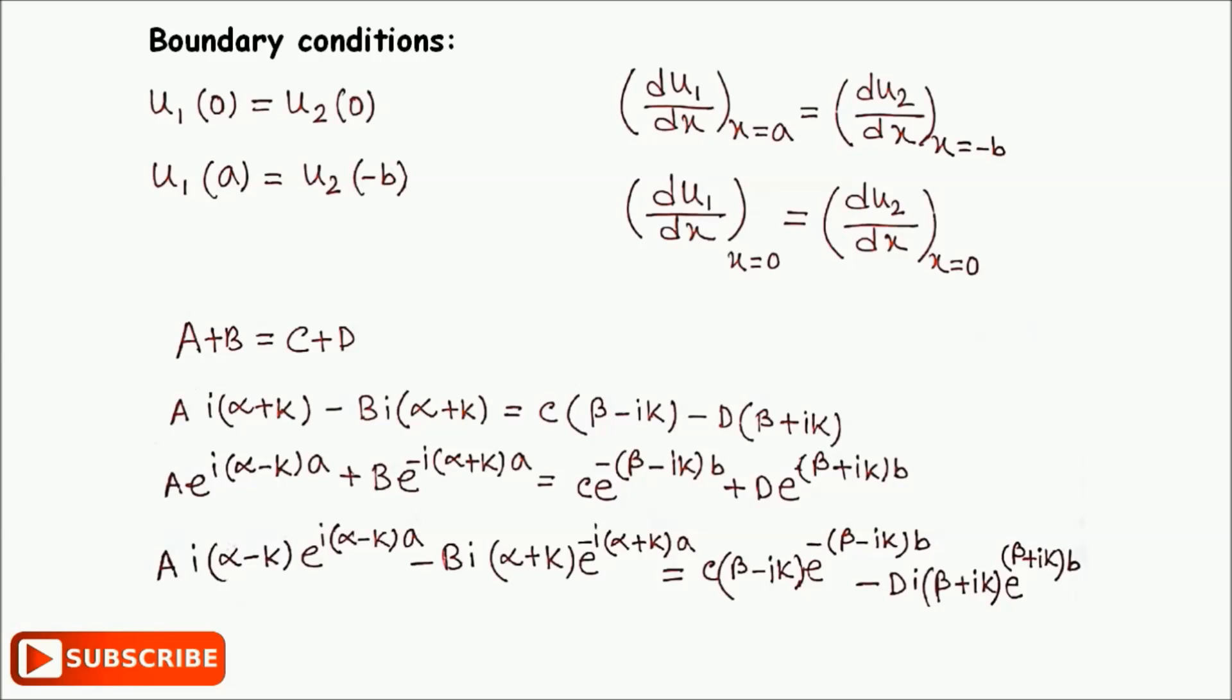These equations are used to determine the constants A, B, C, and D. A non-zero solution of these equations exists only if the determinant of the coefficients of A, B, C, D vanishes. On solving the determinant, we obtain the following equation.